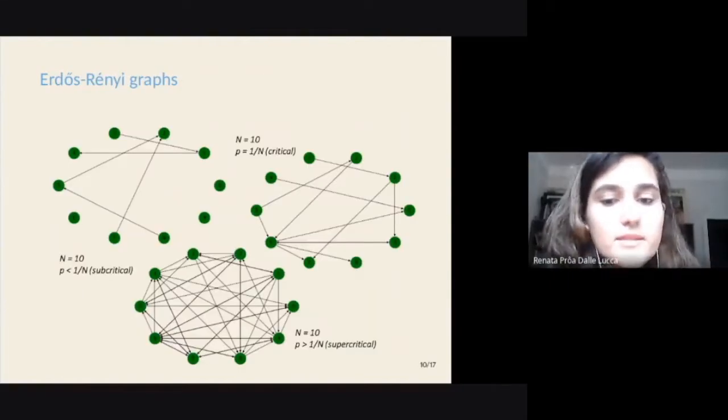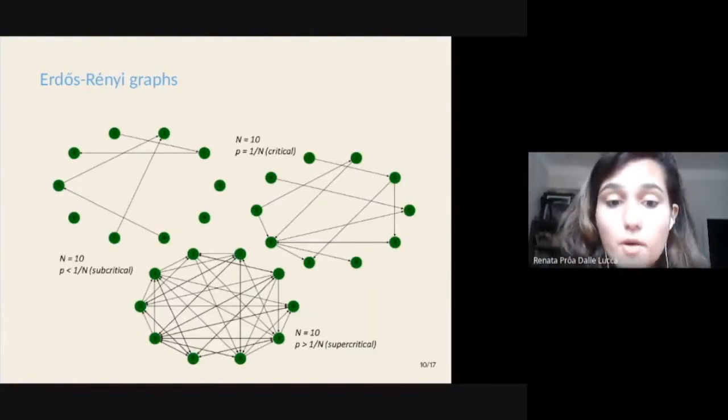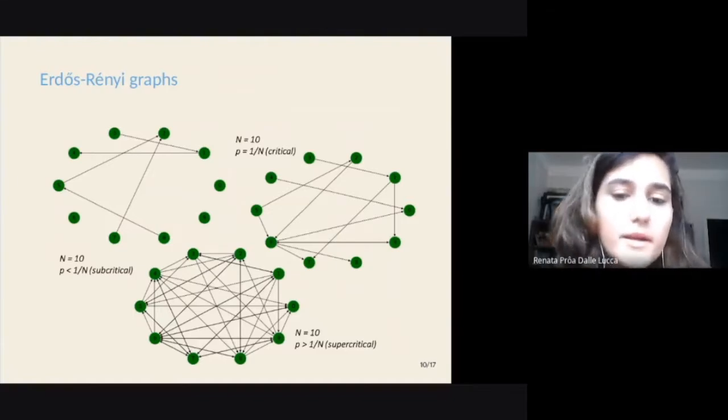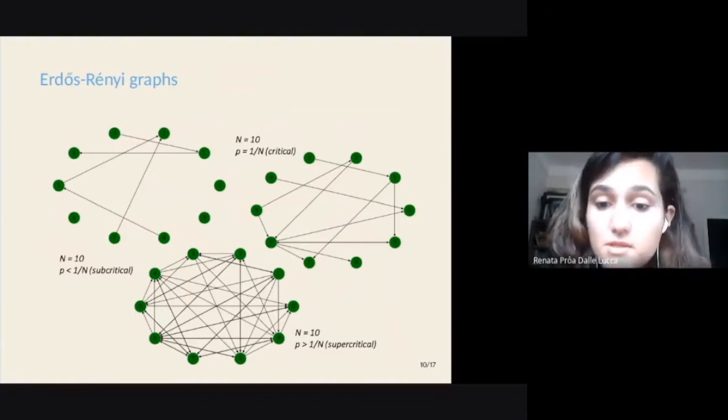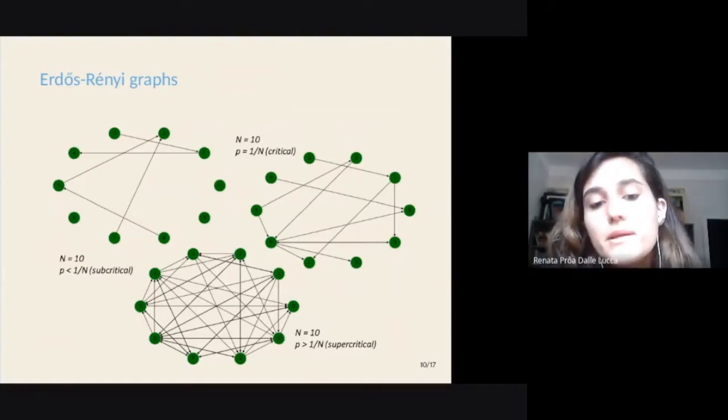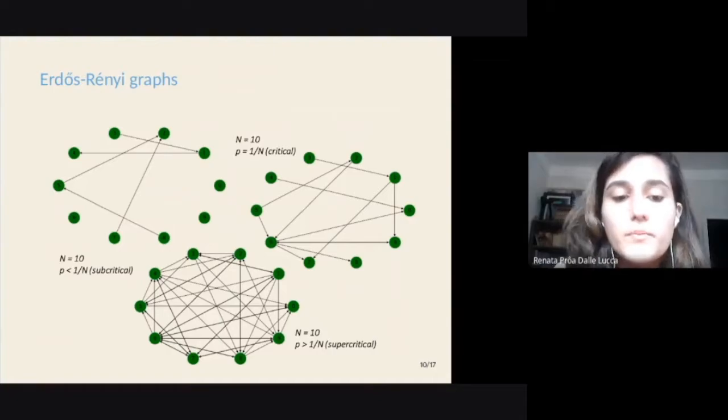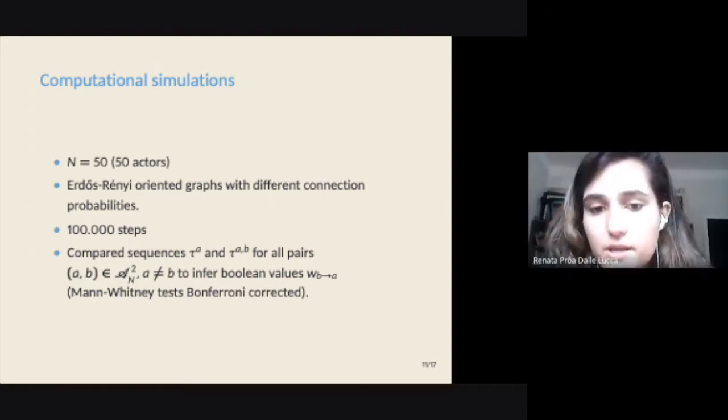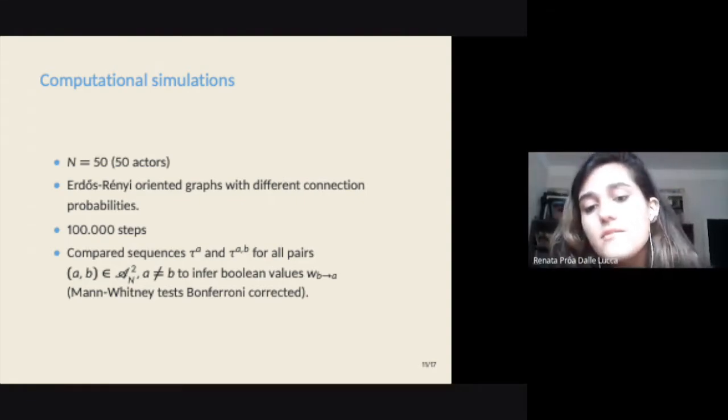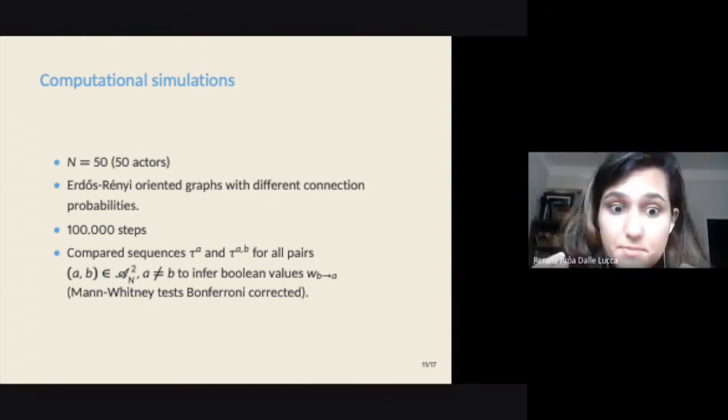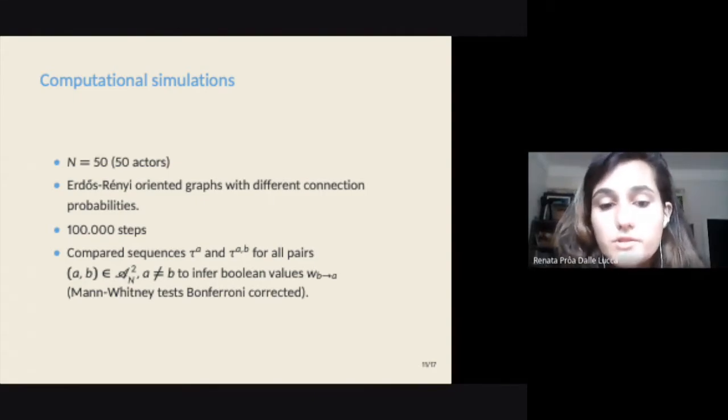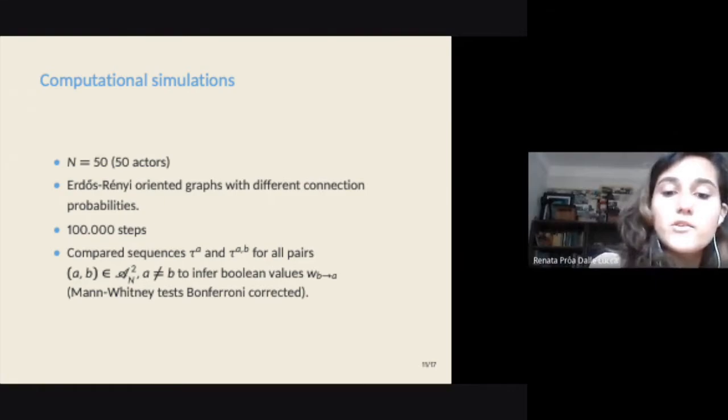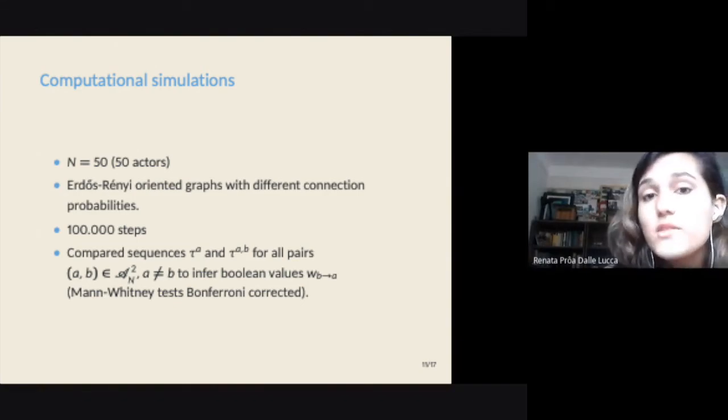In order to test this hypothesis through computational simulations, we'll use random graphs as network influence. More specifically, we'll use oriented Erdos-Renyi graphs, where all actors have the same probability of influencing one another. So, what we did was simulate the evolution of a social network with 50 actors and Erdos-Renyi graphs, providing the relations of influence within 100,000 time steps. And then we compare the sequences tau_A and tau_AB for all pairs of actors to infer if actor B influences actor A, and with that, estimate the entire influence network. We did this for Erdos-Renyi graphs with different connection probabilities.